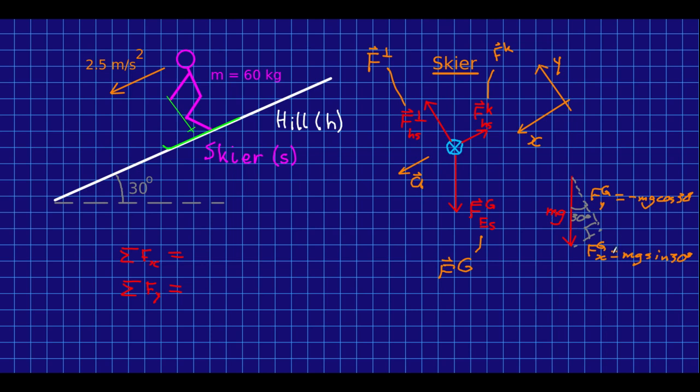And so now I'll put those in. I have an x component of the gravitational force, and the only other force with an x component is fk, and its x component is negative its magnitude. And so that is all equal to mAx, and I'll come back to that in a moment.